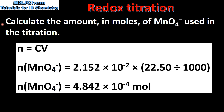The first step is to calculate the amount in moles of the permanganate ion used in the titration. To do this we use the equation n = cv, where n is amount in moles, c is concentration in moles per decimetre cubed, and v is volume in decimetres cubed. We multiply the concentration of the potassium manganate solution by the volume in decimetres cubed, which gives us 4.842 × 10⁻⁴ moles.